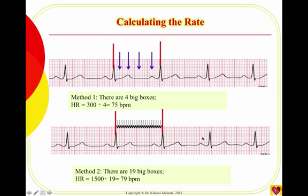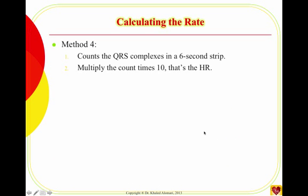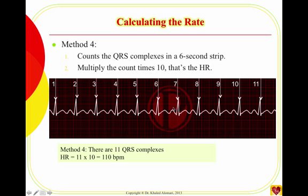The advantage of this method is that it doesn't matter whether the rhythm is regular or irregular — you can just count the QRS complexes and multiply by 10. As you can see here, just count the R waves and multiply by 10 to get the heart rate.